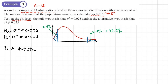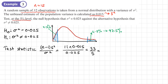Our formula for the test statistic is (n − 1) × s² / σ². So that's (12 − 1) = 11, times by s² = 0.015, divided by σ² = 0.025. That gives us 33/5, which is exactly equal to 6.6. Now we want to find out if this is in the critical region or not, so we're going to calculate our critical values.